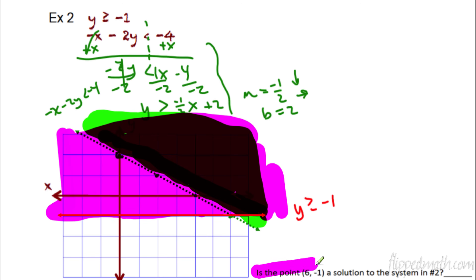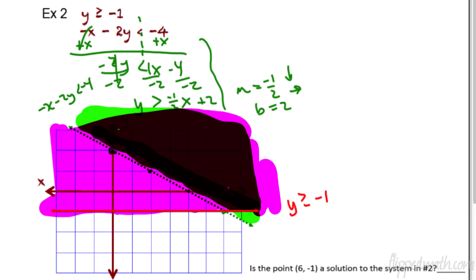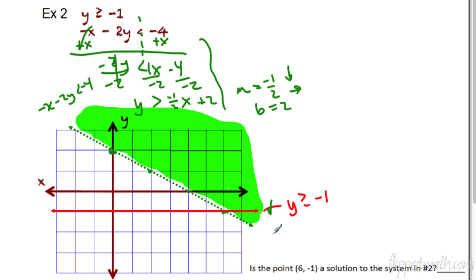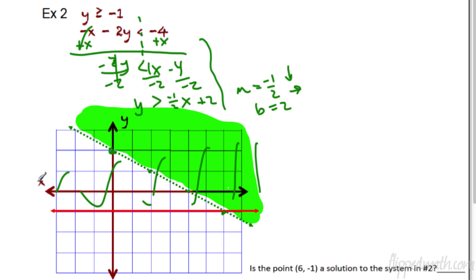The question is: is the point (6, negative 1) a solution to the system in number 2? If we go to (6, negative 1) — over 6, down 1 — it's this point right here. Is that point included? Let me take the shading off so you can see what it looks like. This point — it's not included because it's on the dotted line. It's on the red-shaded region, but it's on the dotted line. The dotted line means the line is not included. So the answer here is no.